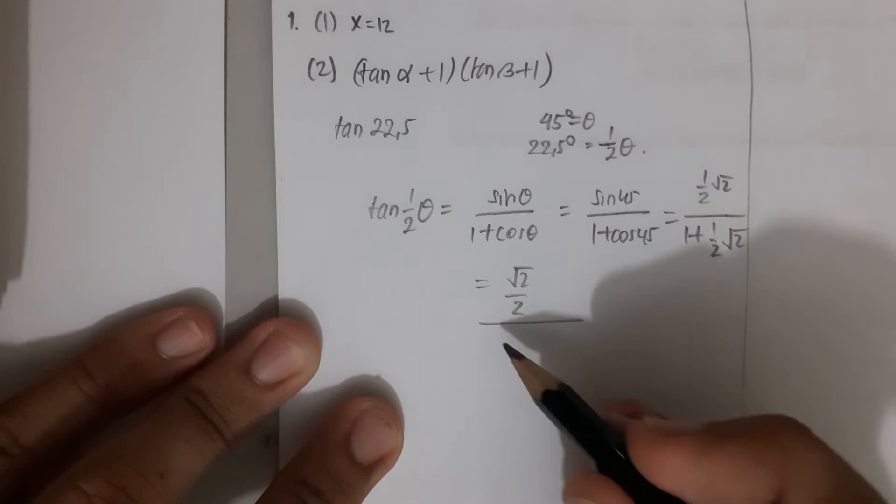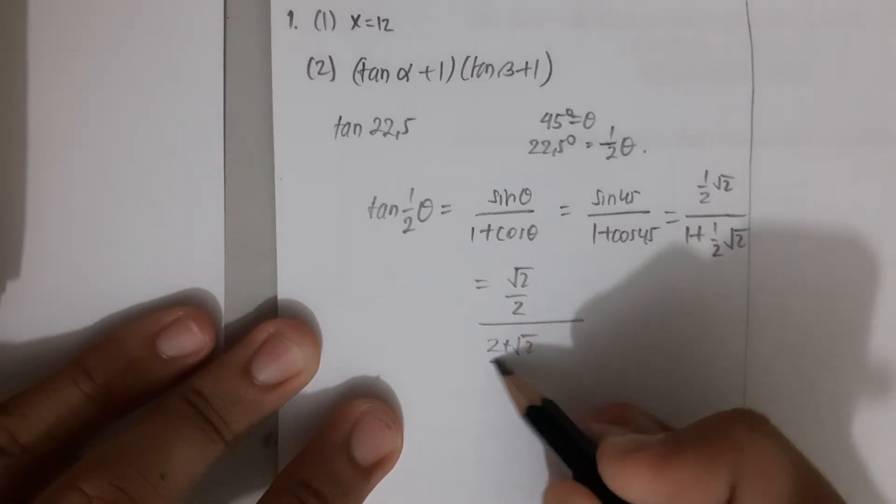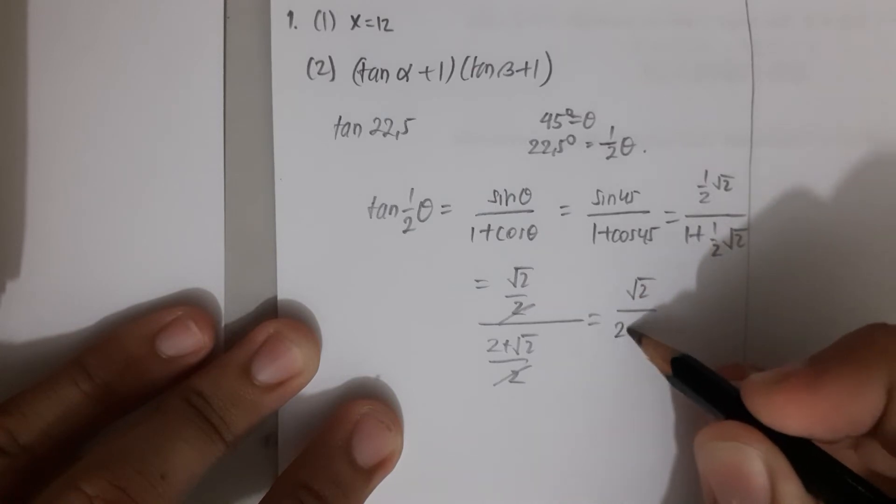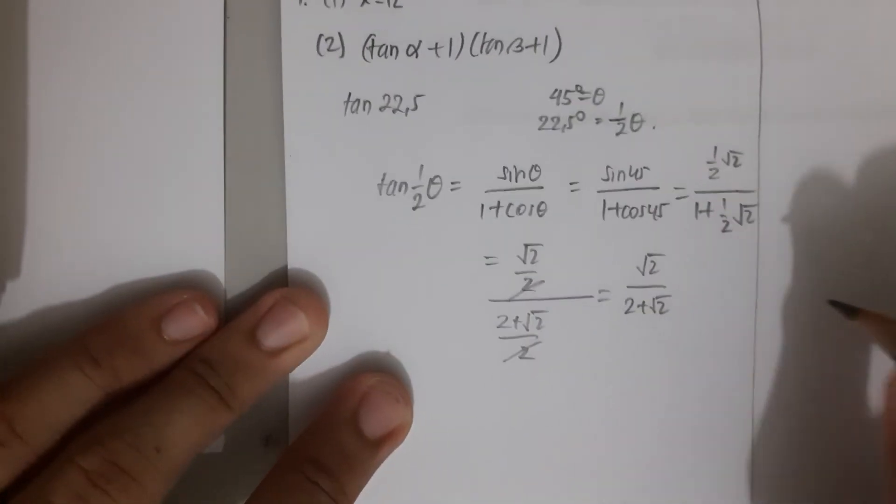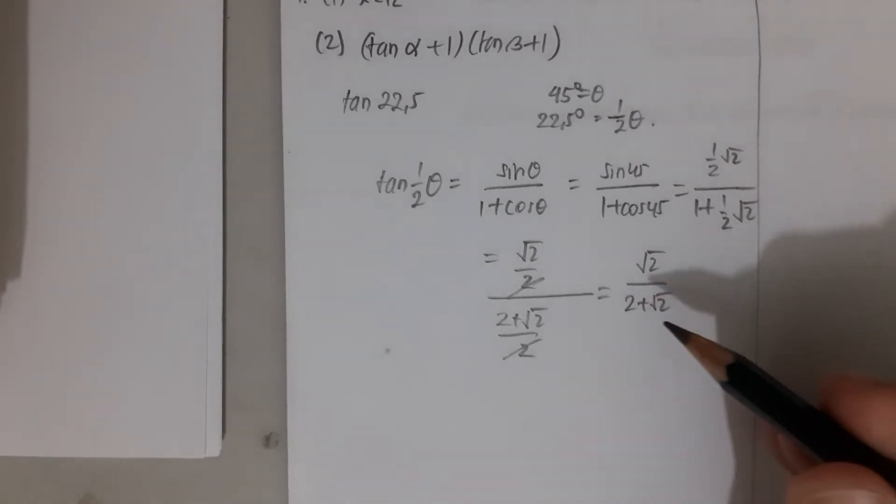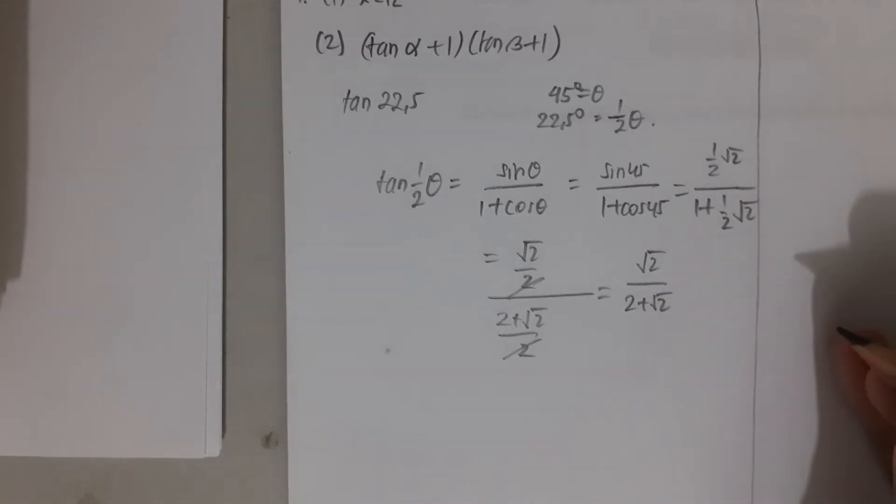We can make the denominator equal, so (2 + √2)/2. We can cross that, so this is √2/(2 + √2). Remember, if you have a root in the denominator, you want to make it rationalized.